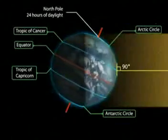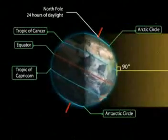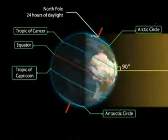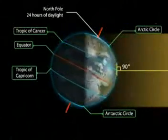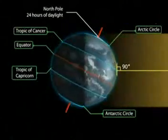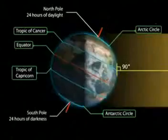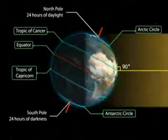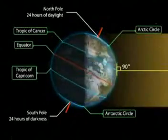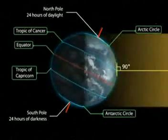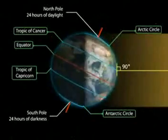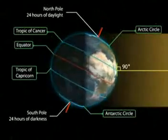Besides, there are 24 hours of daylight at the Arctic Circle, and 24 hours of darkness at the Antarctic Circle.